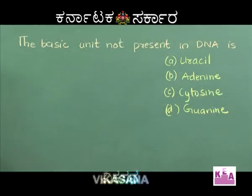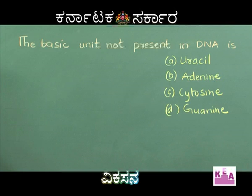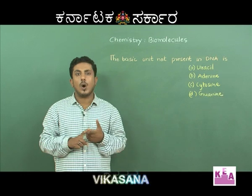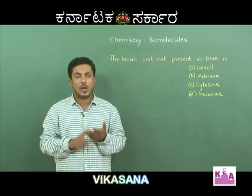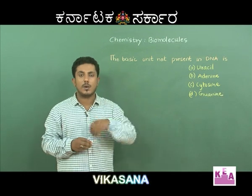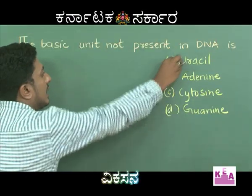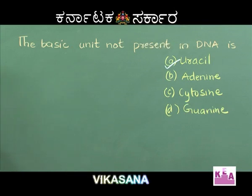The basic unit not present in DNA: Option A Uracil, Option B Adenine, Option C Cytosine, Option D Guanine. DNA contains adenine, cytosine, guanine, and thymine — it does not contain uracil. Uracil is present in RNA. So, the basic unit not present in DNA is uracil. Hence, Option A is the right answer.